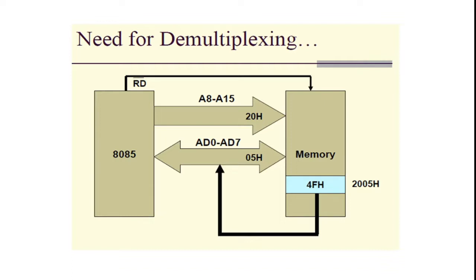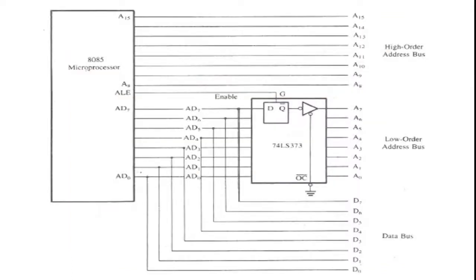We need to demultiplex the address data bus. To perform demultiplexing in the 8085, we use the 74373 IC. The 74373 IC contains 8 different flip flops, because each flip flop stores only 1 bit of information. So in order to demultiplex 8 address lines, we need 8 different flip flops.